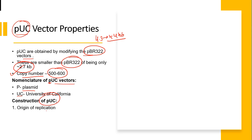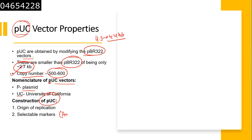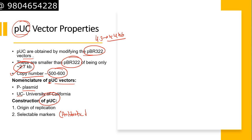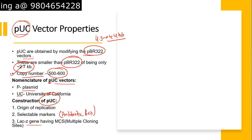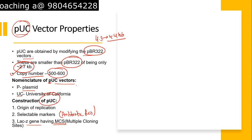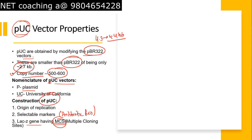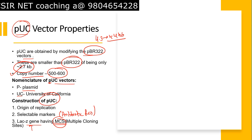The components of the pUC vector are: first, an origin of replication; second, a selectable marker — in this case an antibiotic resistance marker; and third, a lacZ gene containing a multiple cloning site. In this vector, the multiple cloning site is placed within the lacZ gene.